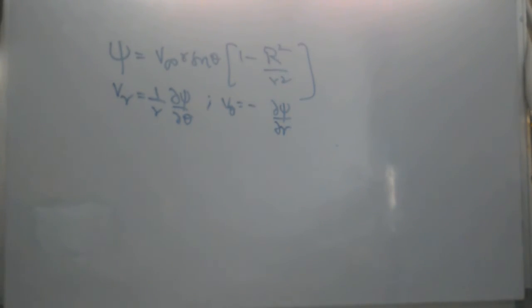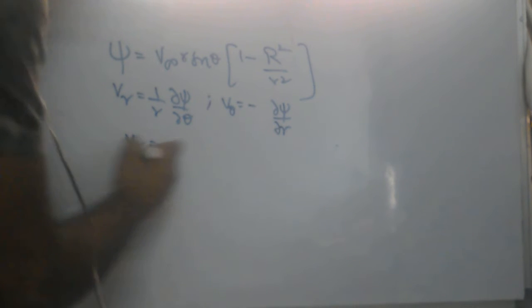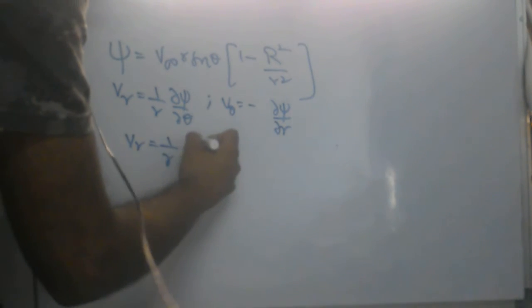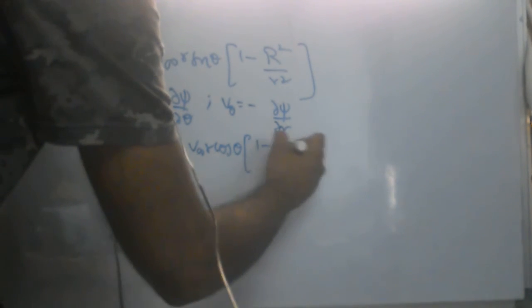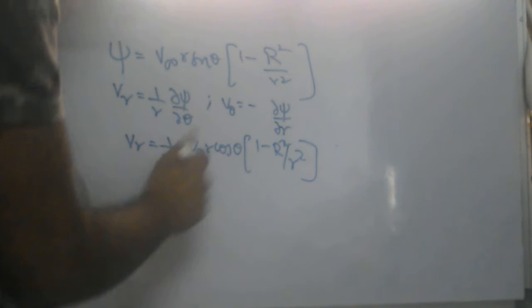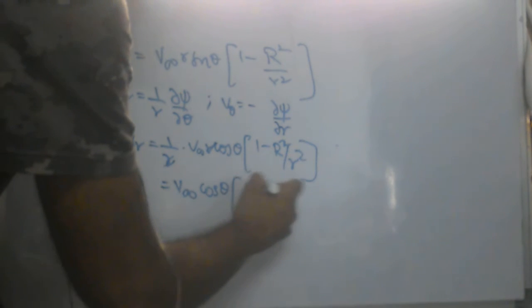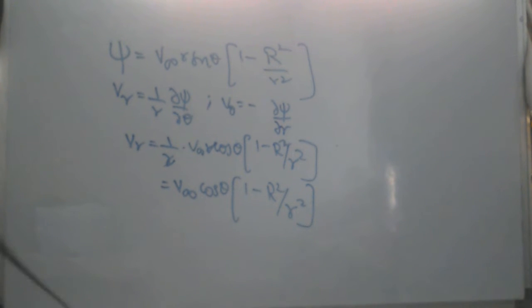Differentiating the stream function with respect to theta and multiplying by 1/r gives us V-infinity R cos theta times (1 minus R squared over r squared). The R in the numerator and the r from the 1/r factor cancel, which leaves us with Vr equals V-infinity cos theta times (1 minus capital R squared over small r squared). This is the radial velocity at any given point in the flow field.